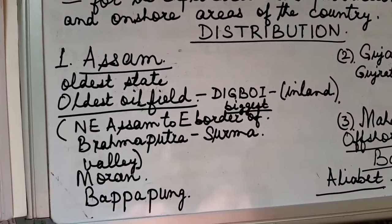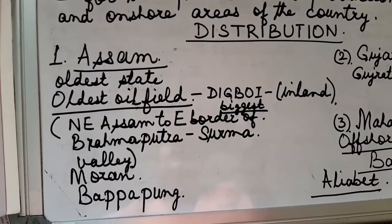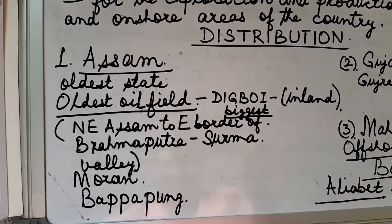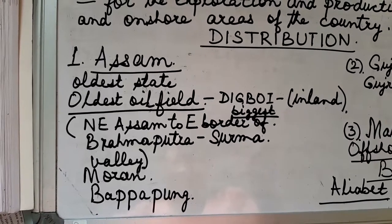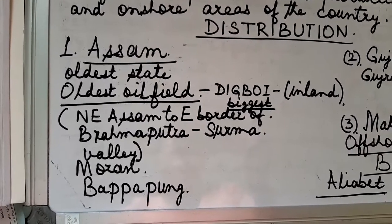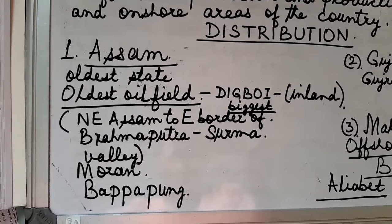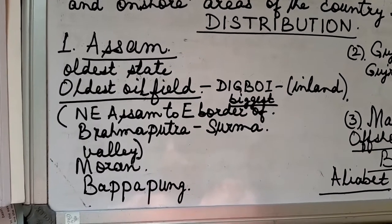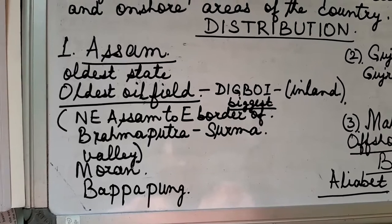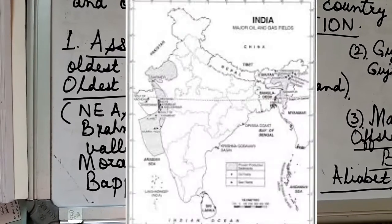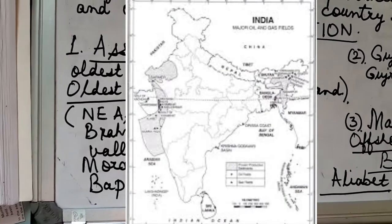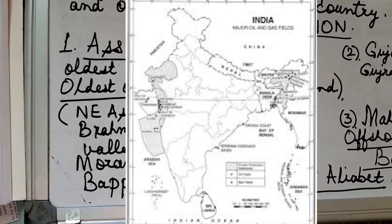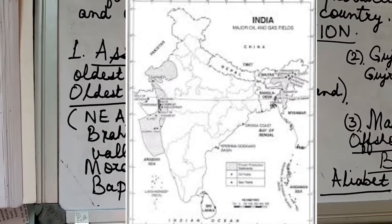Among the inland oil fields, the state of Assam has many oil fields. Digboi is very important — it is both the oldest and the largest oil field in the country, and it lies in the state of Assam. The belt of oil fields in Assam runs from northeast Assam to the eastern border of the Brahmaputra-Surma valley.